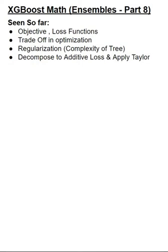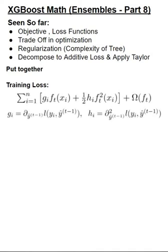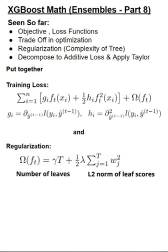Now that we have applied Taylor approximation to the original objective function and got its quadratic form, let's put together both the training loss along with the regularization which we derived earlier. So the training loss we have derived so far is this particular formulation where we have the g i and h i terms and we have earlier done the regularization term which had the number of leaves and the L2 norm of the leaf score.